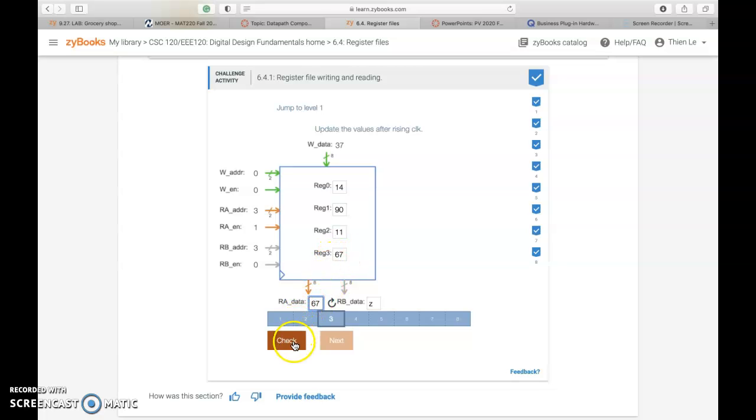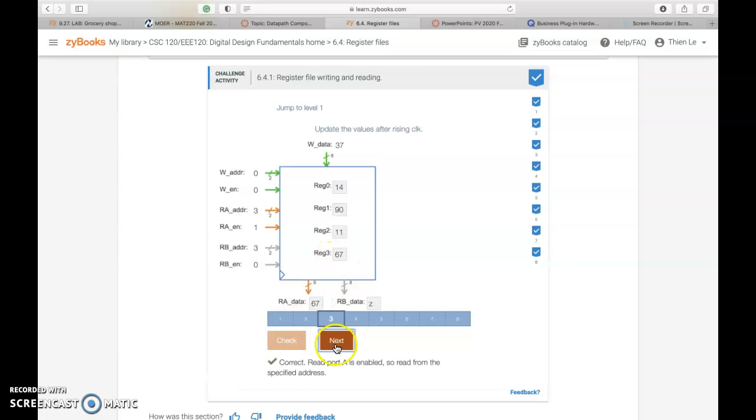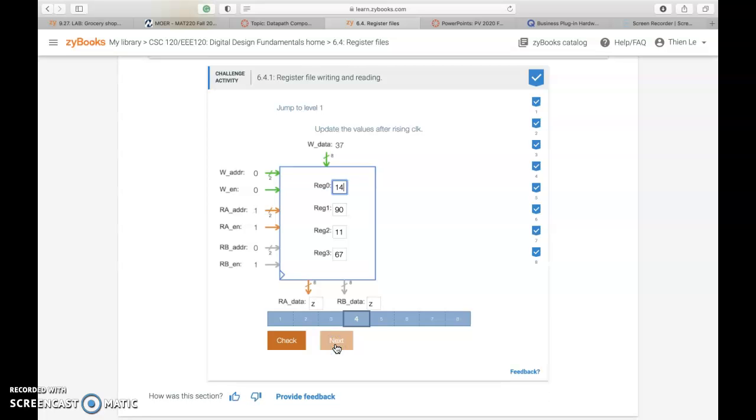For number 4, it seems that we don't use the W. We're using the RA and the RB. So we see that the RA is enabled and we're using register 1 for this. So we look at register 1 which is 90, so we put it in for 90.